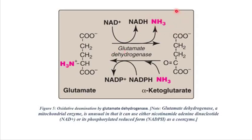This ammonia will enter the urea cycle to be converted into urea. Ammonia is a nitrogenous product, but it is toxic to the nervous system, so the body metabolizes it into urea, which is less toxic, and this urea is then secreted through the urine.